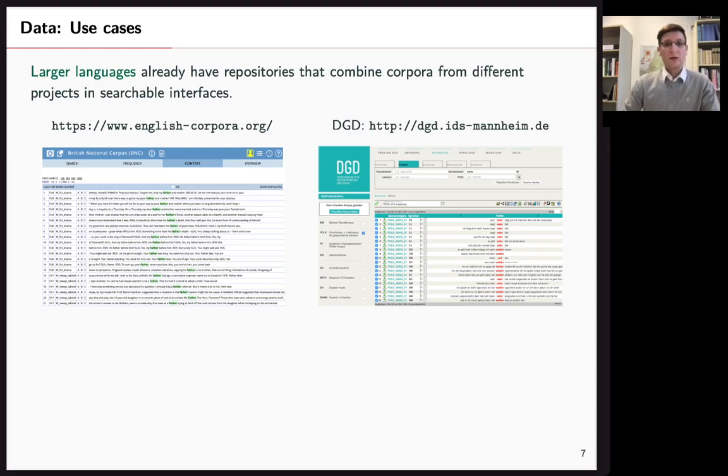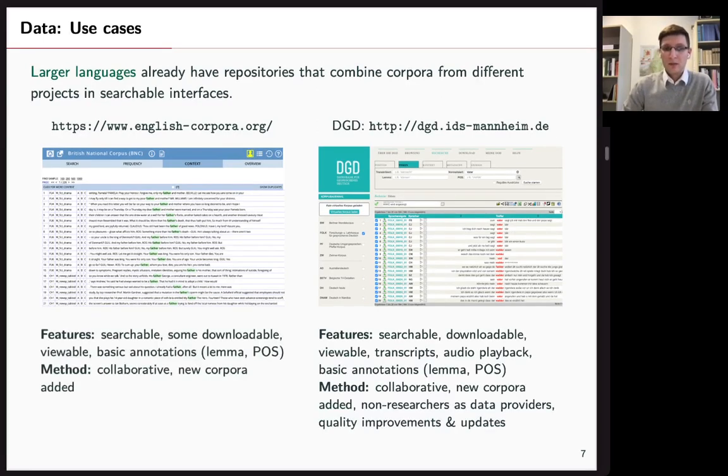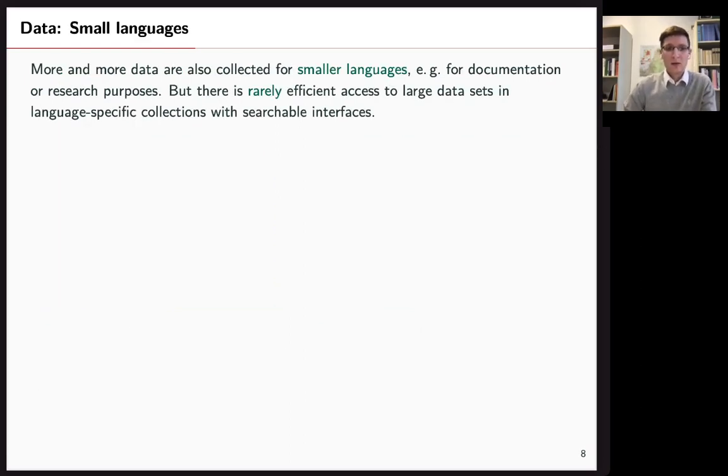For larger languages we do have some really great repositories that have searchable interfaces like DGD or English Corpora dot org for instance. The DGD is great because it includes lots of spoken data of German. It's searchable, you can download, you can play audio and see basic annotations across different kinds of data and it's really collaborative. So even non-researchers can add data which is really great. However for smaller languages we feel that these kind of resources are lacking.